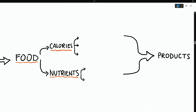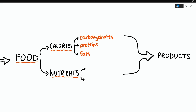Bugs need food to make biogas. Organic waste is composed of the same nutrients that our food has. There's calories — the part of food that gives us energy — which are your carbohydrates or carbs, proteins, and fats. Nutrients are like vitamins and minerals but for bugs. We have macronutrients — the nutrients that bugs need more of — like nitrogen, phosphorus, and potassium, and micronutrients — the nutrients that bugs need less of — like nickel, cobalt, and molybdenum. But tiny concentrations of these are important for making gas.